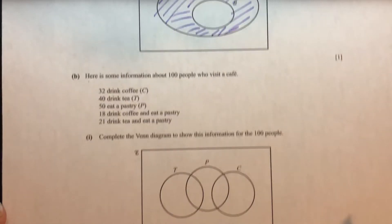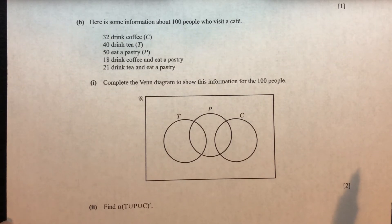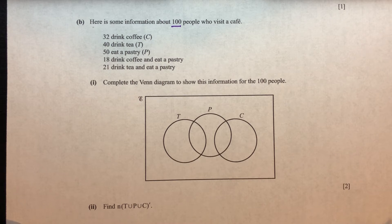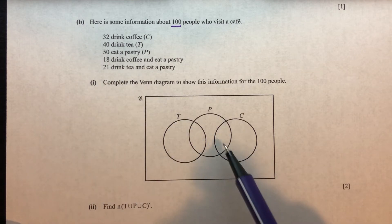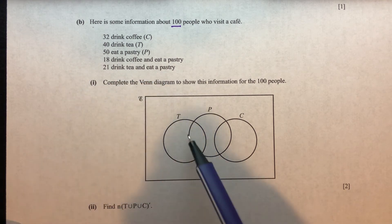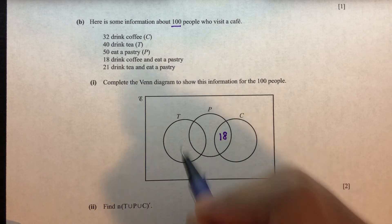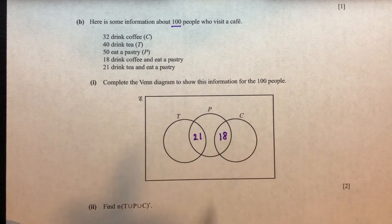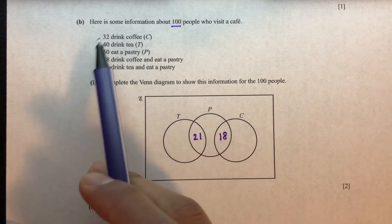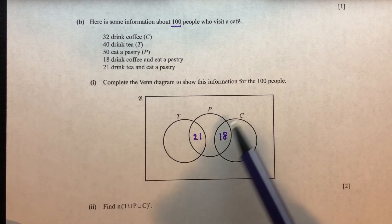Moving on to part B. We have information about 100 people (the universal set). 32 drink coffee, 40 drink tea, 50 eat pastry, 18 drink coffee and eat pastry, 21 drink tea and eat pastry. So the whole coffee set is 32. Only coffee = 32 minus 18 = 14.